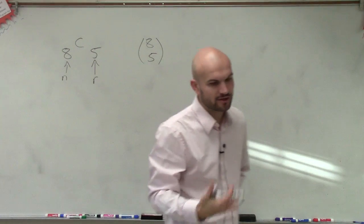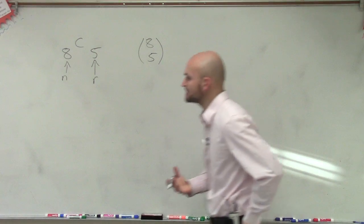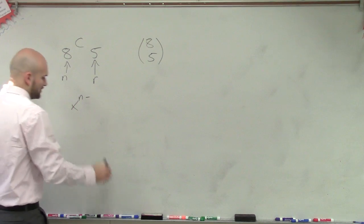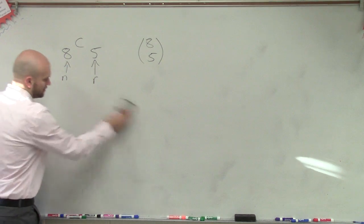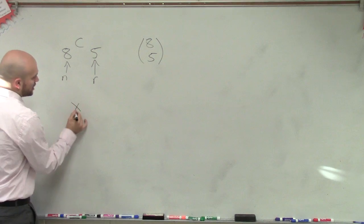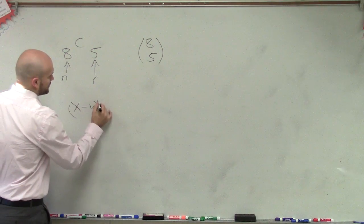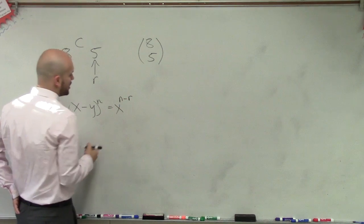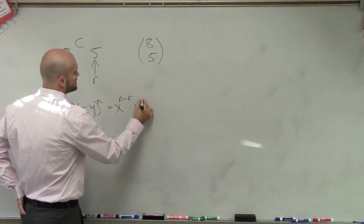And now remember, when we're talking about the binomial expansion, all of our terms can be written in the form of x to the n minus, if I have a term x minus y to the n, every single one of our terms can be written in this form: x to the n minus r times y to the r.